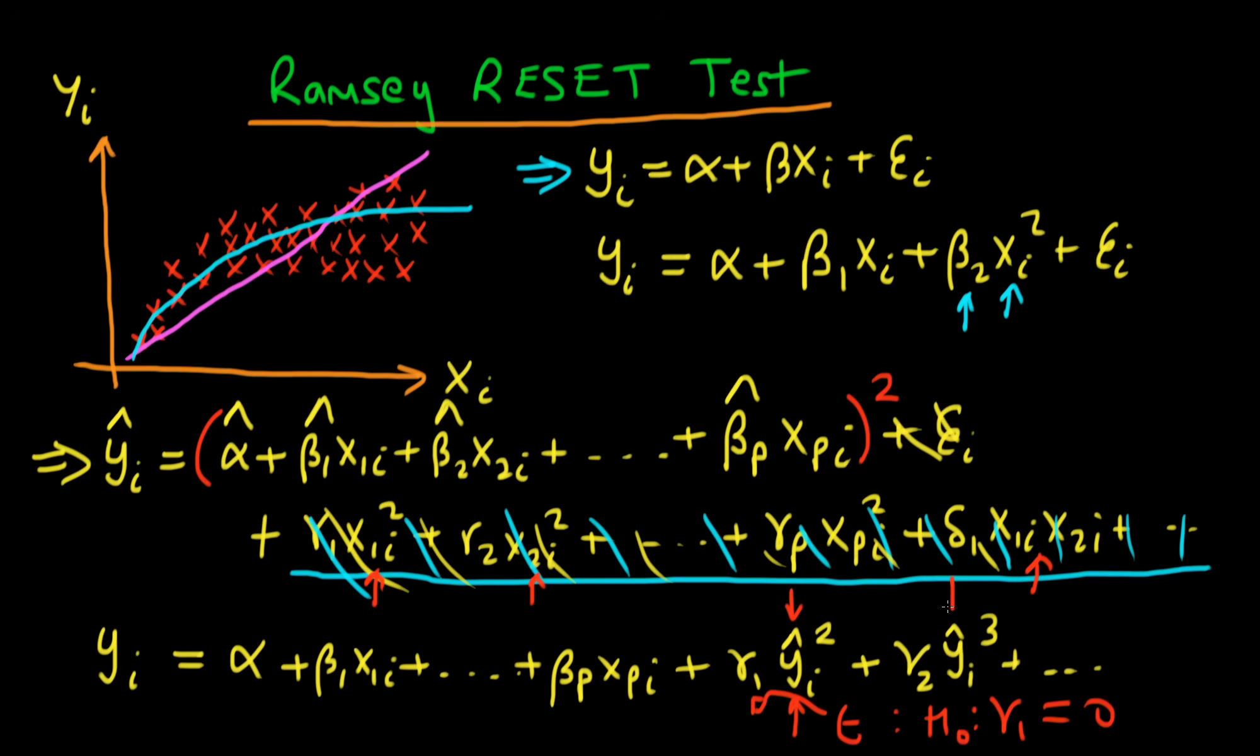And similarly this cubic term of yi hat, essentially what we're doing here is we're just cubing this bracket up here. And you can think about if we were to cube it, we'd get these individual cubic terms and we'd also get these cubic cross product terms. So we're testing for higher order functional misspecification by including this cubic term here.